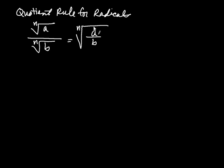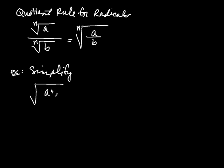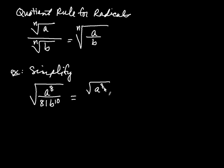Let's see an example of how we use the quotient rule to simplify. Let's say we're asked to simplify the square root of a to the eighth divided by 81b to the tenth. When I look at this, I'm thinking about the quotient rule in reverse — I have one giant radical, and I can split this single radical into two radicals. So I take the square root of the numerator, the square root of a to the eighth, and divide that by the square root of the denominator, the square root of 81b to the tenth.